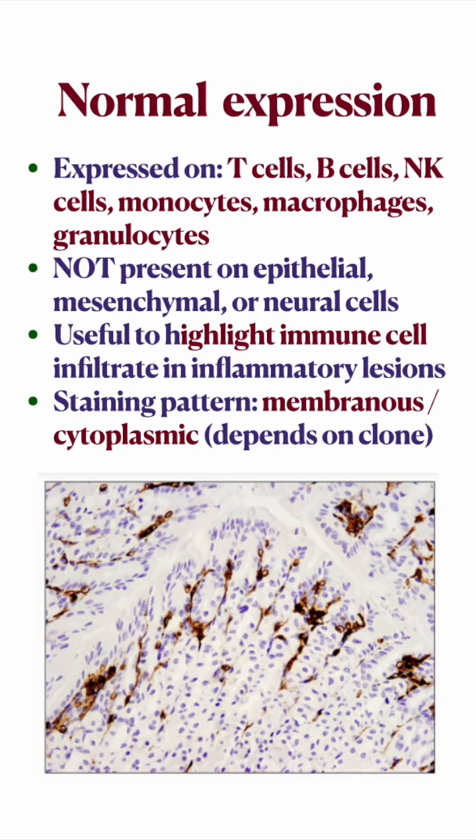Normally, CD45 is expressed on B and T lymphocytes, NK cells, monocytes, macrophages, and granulocytes, and hence it is also positive in tumors arising from these cells. It is not present on epithelial, mesenchymal, or neural cells, and hence it can differentiate hematopoietic cells from other cell types.